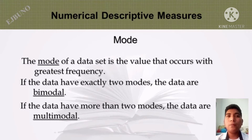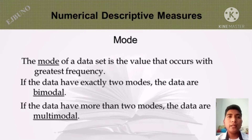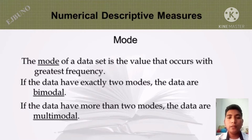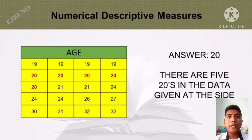Mode. The mode of a data set is the value that occurs with greatest frequency. If the data have exactly 2 modes, the data are bimodal. If the data have more than 2 modes, the data are multimodal. Example: for age of students, the most frequent age is 20 — there are five 20s in the given data.